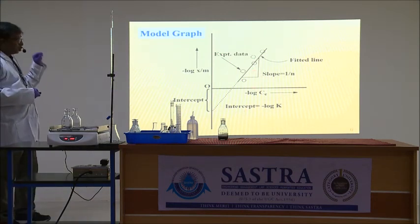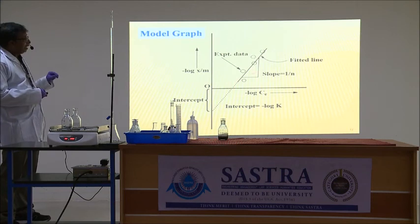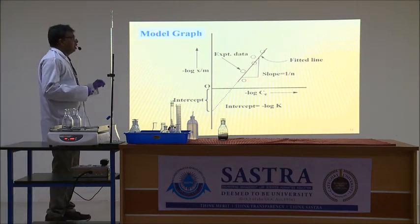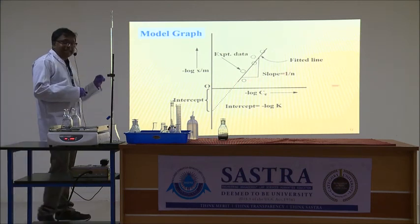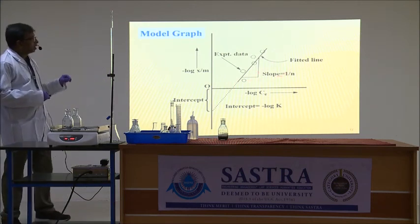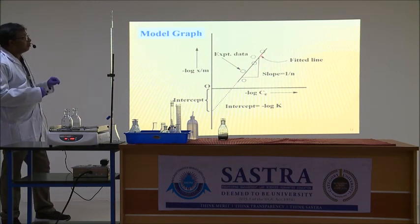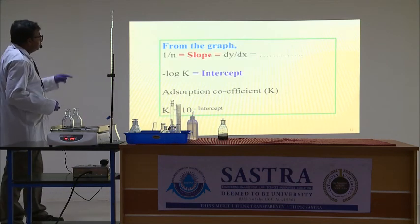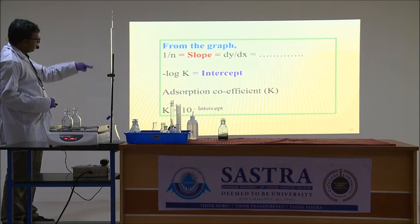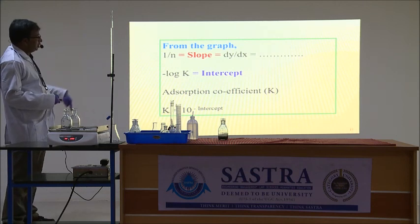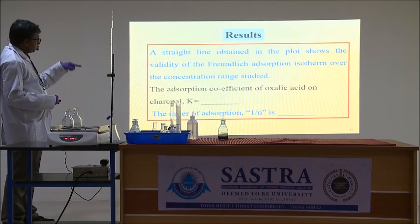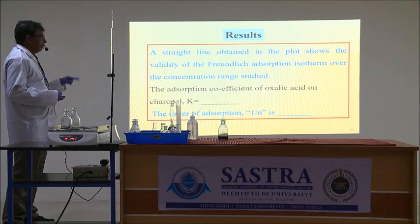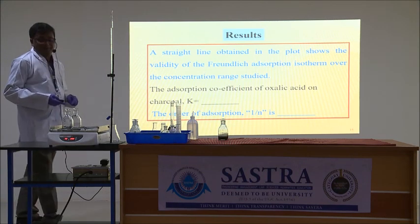The straight line graph indicates that adsorption of oxalic acid on charcoal surface follows the Freundlich adsorption isotherm. Next, we will calculate and report the results — the values of K and 1/N. Thank you very much.